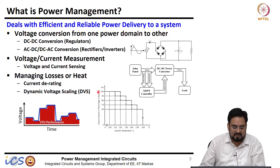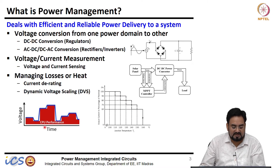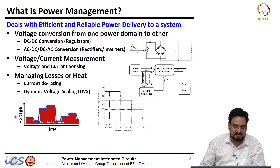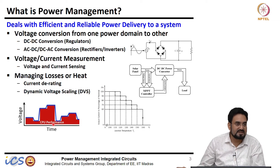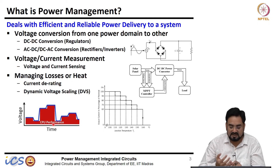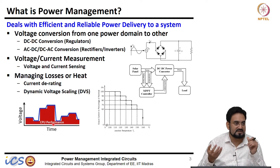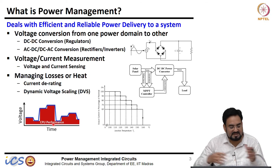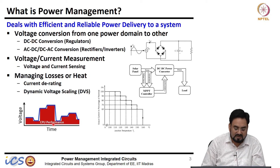Another type is dynamic voltage scaling, where depending upon the performance required by the system, the voltage is changed dynamically. The example is your CPU. When the CPU is running at full performance — for example, you are running lots of applications on your cell phone, watching videos, listening to music, and surfing the internet simultaneously — a lot of processing is going on in the processor and it requires a lot of power at that time.